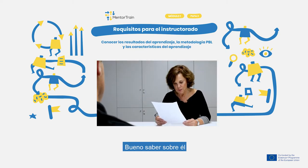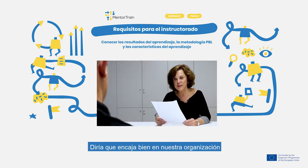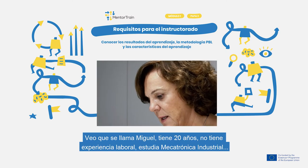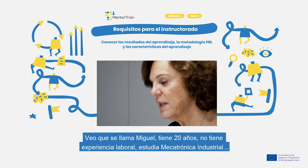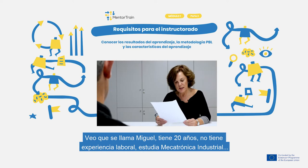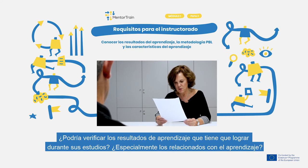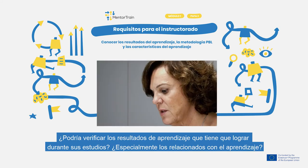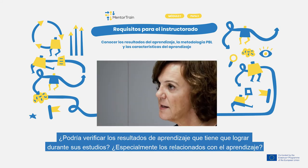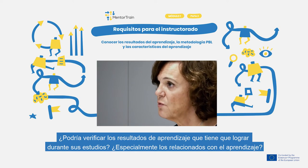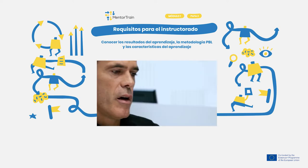Okay, good to know about him — he seems to fit in our organization. I see his name is Michael, he's 20 years old, he has no work experience, and he's studying industrial mechatronics. Could I check the learning outcomes he has to achieve during his studies, and especially those related to the apprenticeships?